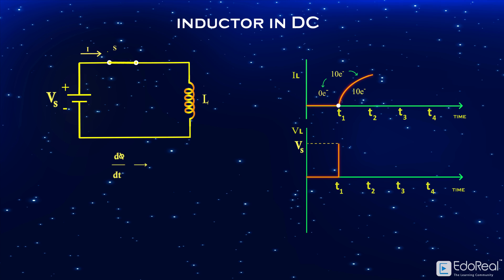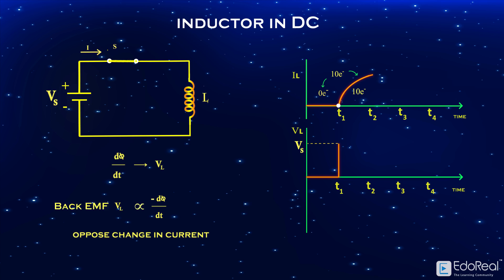This change in flux linkage will induce an EMF across the inductor, because the induced voltage is proportional to the rate of change in flux. The negative sign indicates that the EMF induced will oppose further change in current. This is also called back EMF.